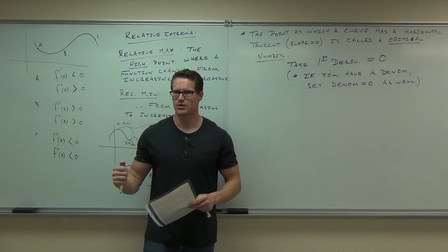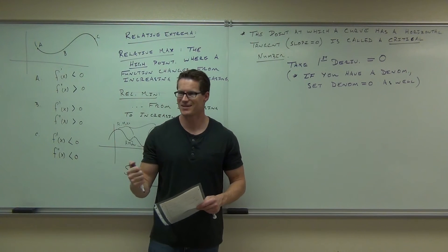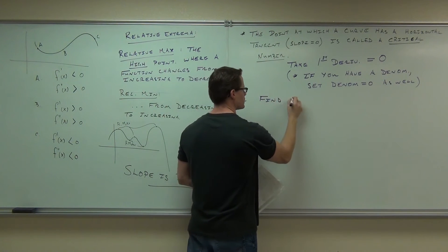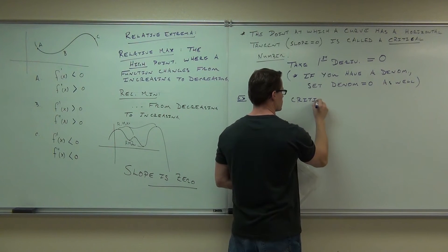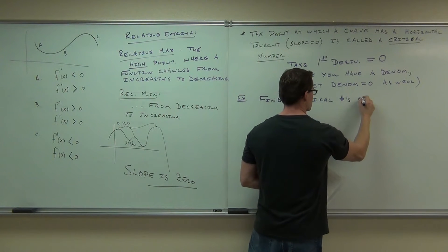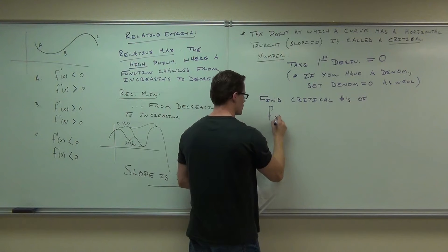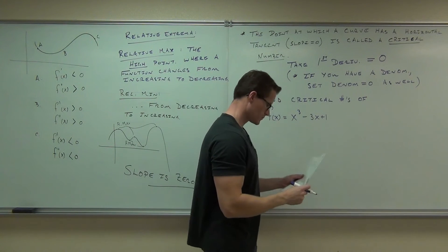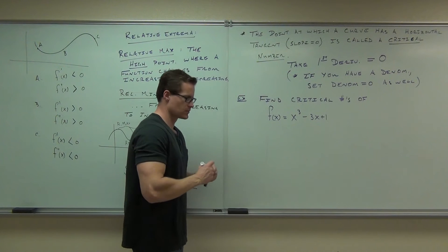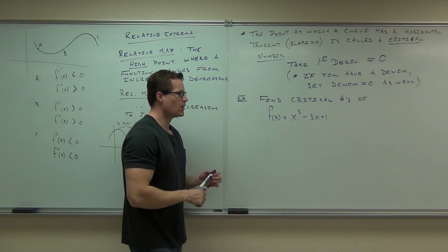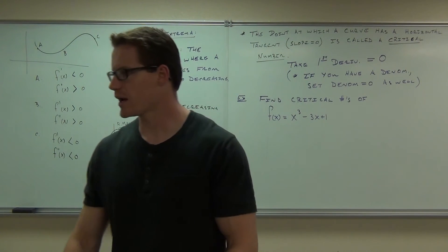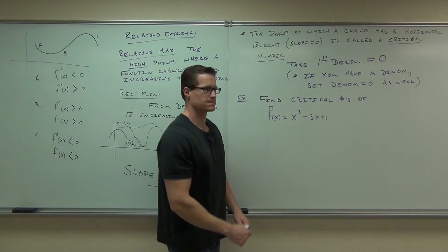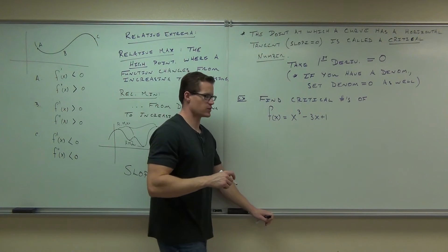Can we do an example? Let's go ahead and find the critical numbers. Find the critical numbers of that function. Critical numbers involve slope — it asks where the slope equals zero. So find the slope function right now, which means take a derivative. Go ahead, take a derivative. Derivatives should be pretty easy — what's the derivative of this thing?